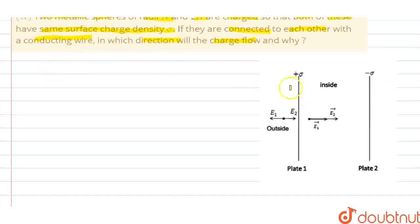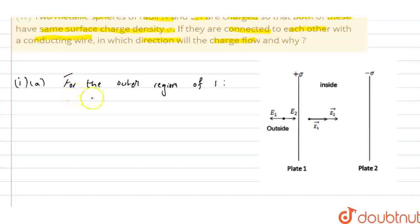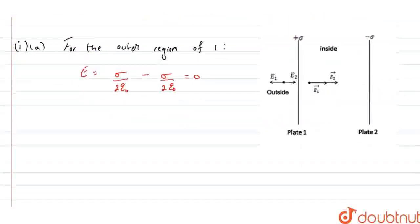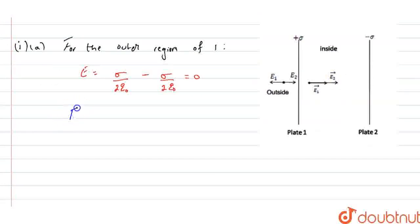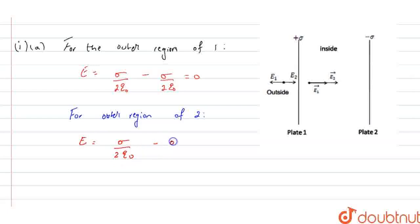For the outer region of plate 1, we have the expression: E equals sigma by 2 epsilon naught minus sigma by 2 epsilon naught, which is equal to 0. Similarly, for the outer region of plate 2, the value of E equals sigma by 2 epsilon naught minus sigma by 2 epsilon naught, which is again 0. So the electric field in the outer regions of both plate 1 and plate 2 is zero.